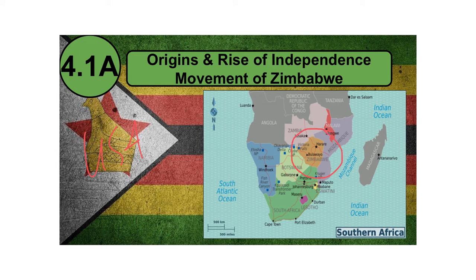If you notice, Zimbabwe is bordered by Zambia, Mozambique, South Africa, and Botswana. Believe it or not, it also has a very small border with Namibia. Nonetheless, here is the nation of Zimbabwe, and that is the nation we will be talking about as our case study for independence movements.